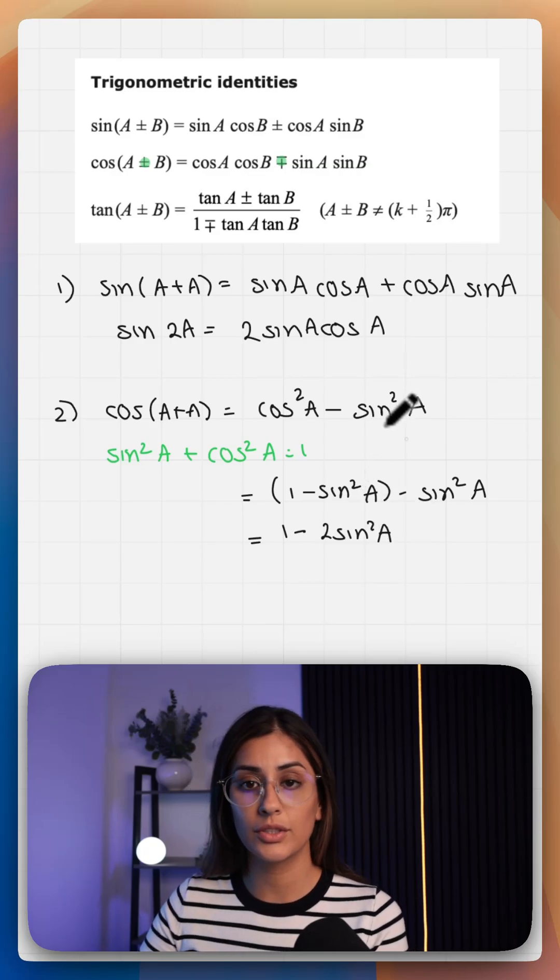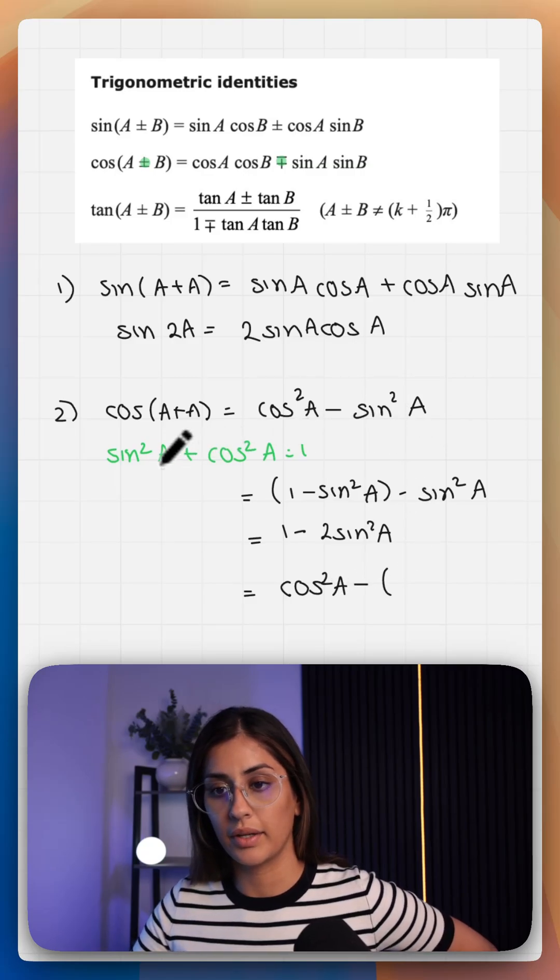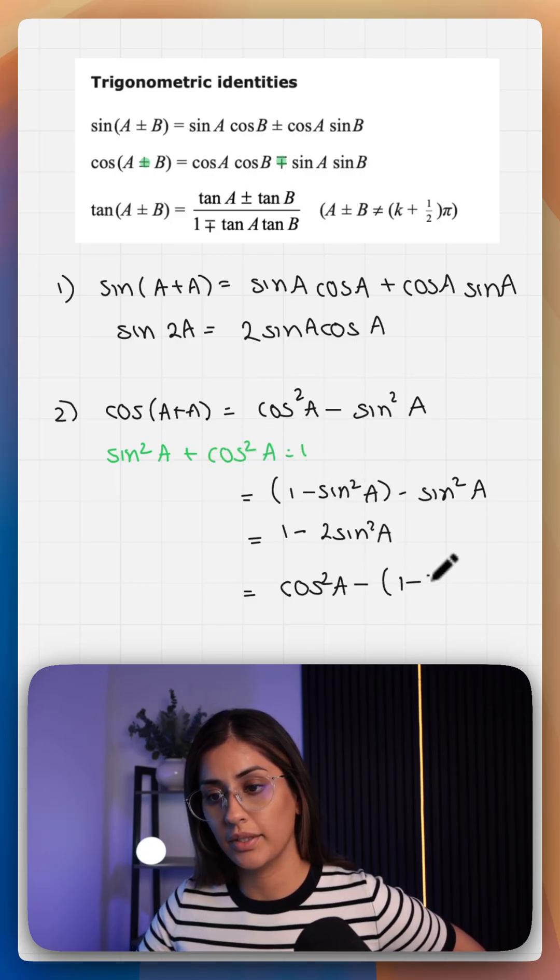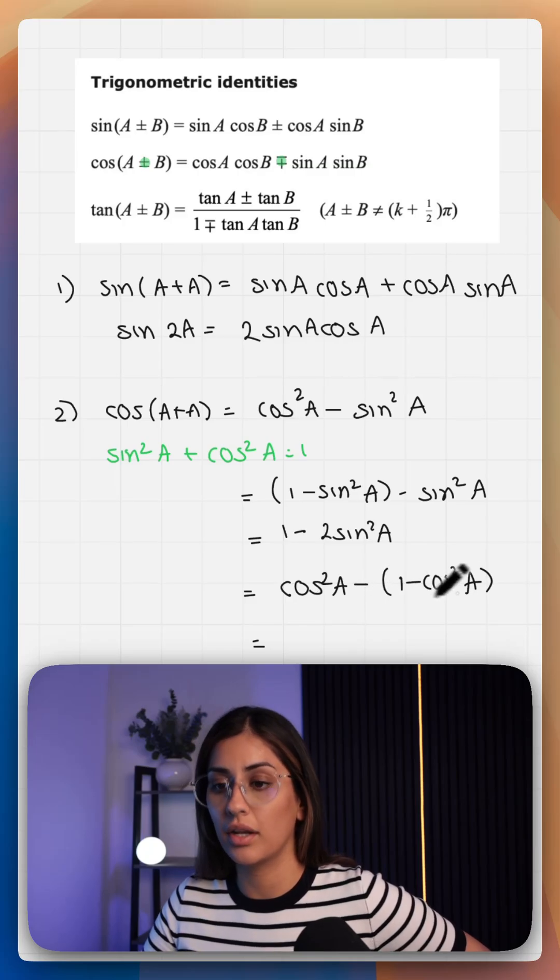We're going to do the same with sine squared a. Another version is sine squared can be written as one minus cos squared, so that's cos squared a minus one plus cos squared a.